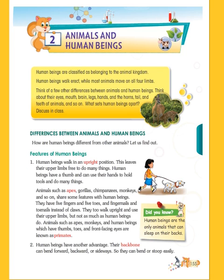Animals such as apes, gorillas, chimpanzees, and monkeys share some features with human beings. They have five fingers and five toes, just like us. In one hand we have five fingers, and in one leg we have five toes. Likewise, gorillas, chimpanzees, and monkeys also have five fingers in their hands and five toes in their legs.